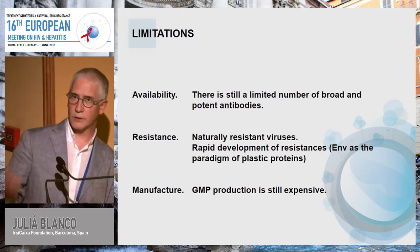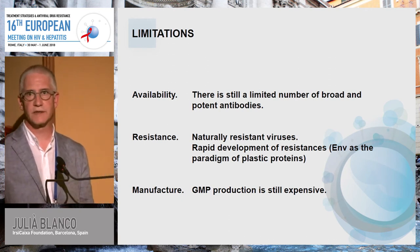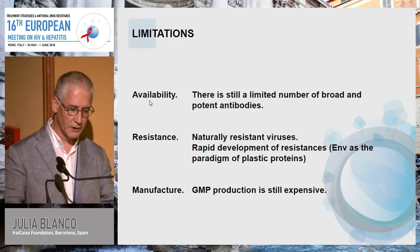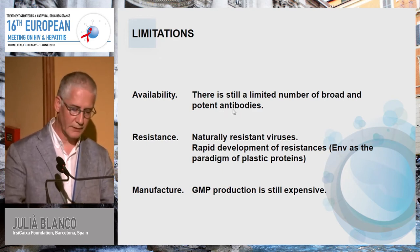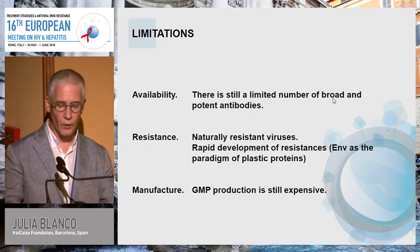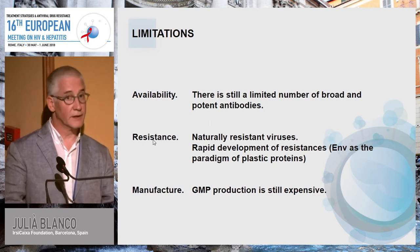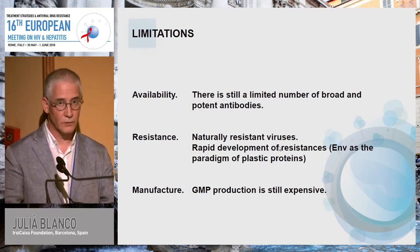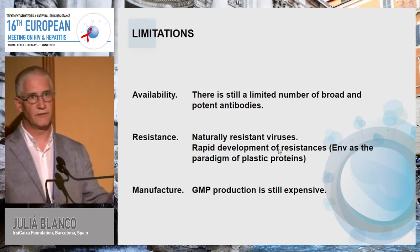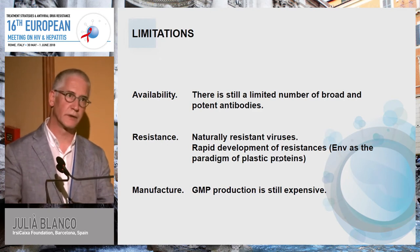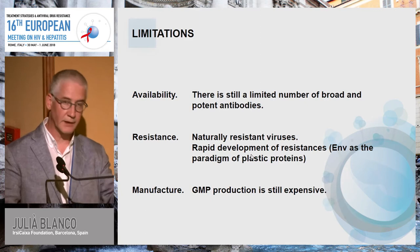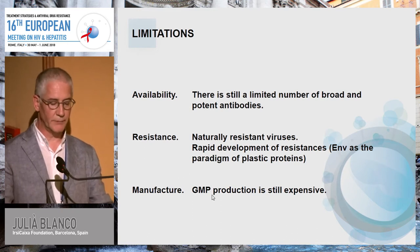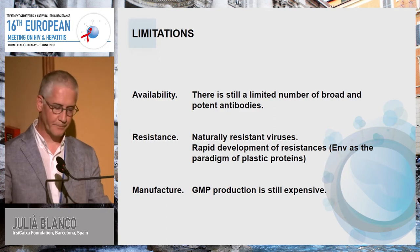So we have antibodies to treat HIV-infected individuals, but they have several limitations. First is availability—we only have a few antibodies and no perfect one for HIV treatment; we need broader and more potent antibodies. Second is resistance: many naturally resistant viruses exist, and sensitive envelopes can rapidly develop resistance to monotherapy. Third is manufacturing—GMP production of these proteins is still expensive.